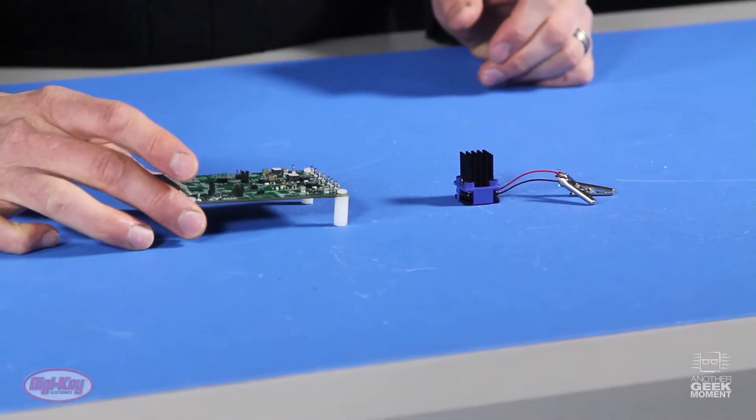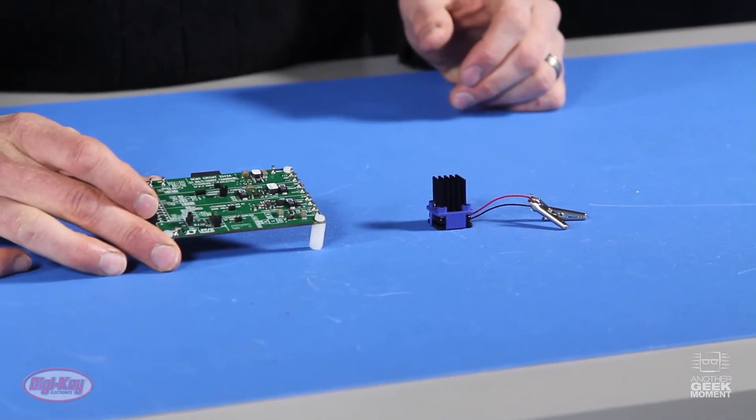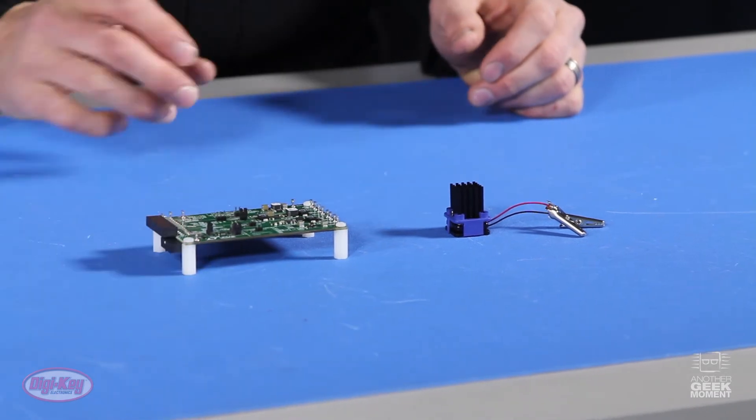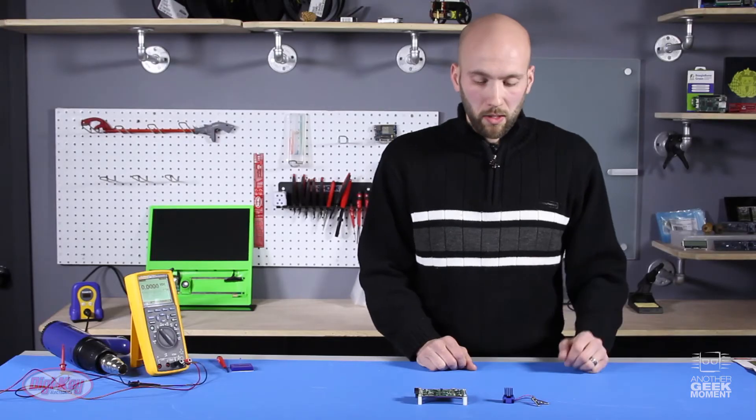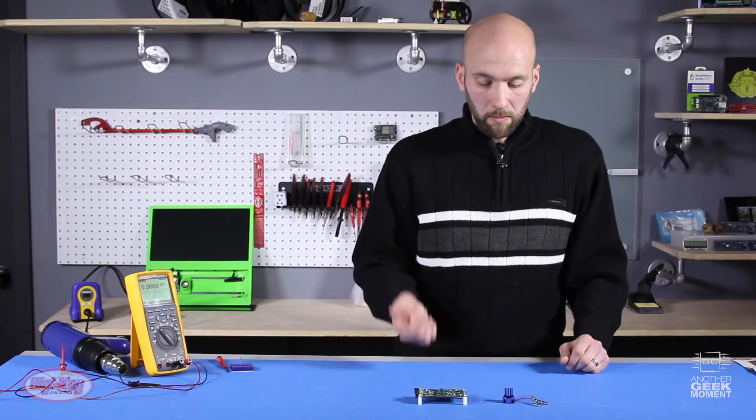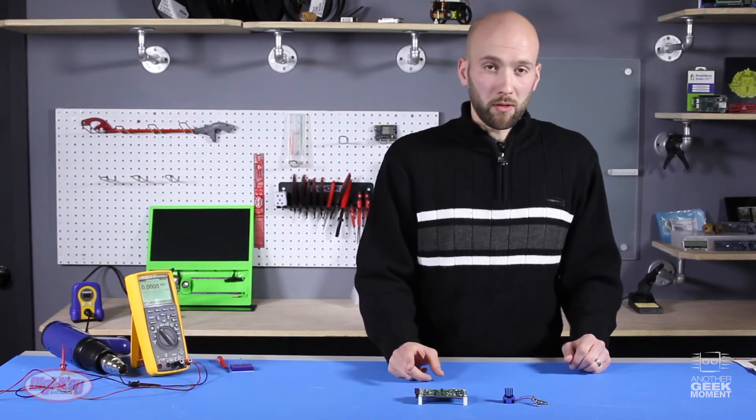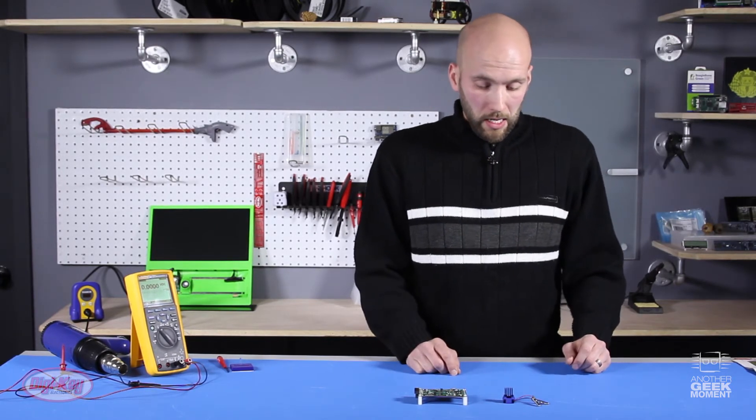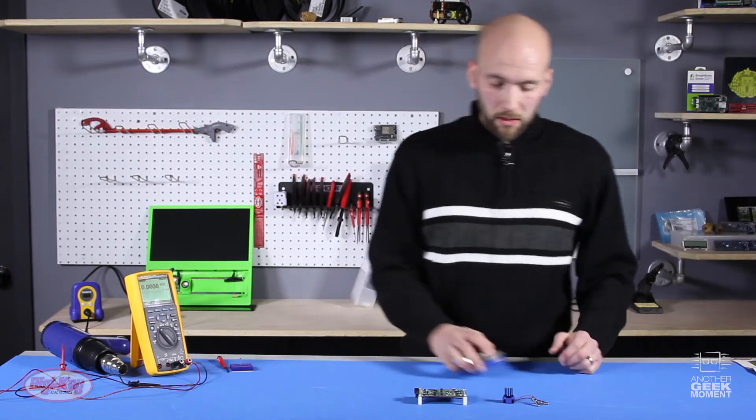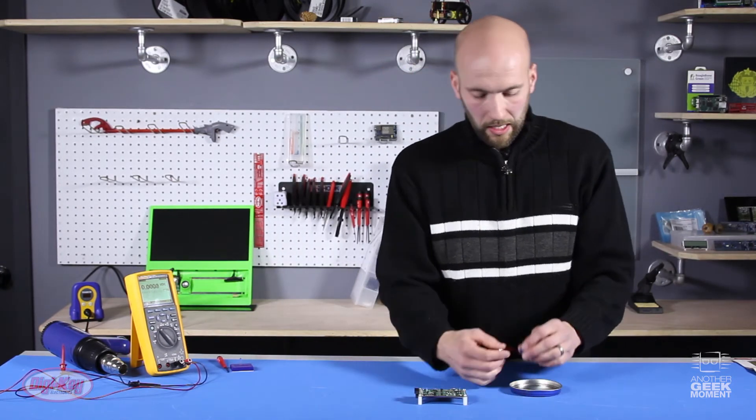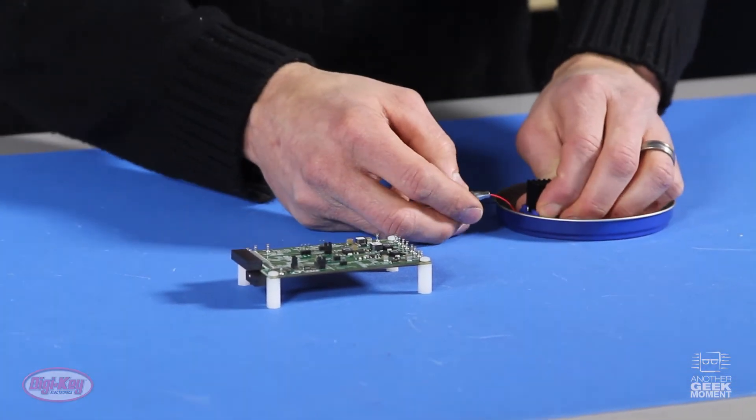The board here also has a 20 millivolt to 400 millivolt range so we're good there. Once it gets to the 20 millivolt range it will give you the 3.3 output that you're looking for. So we'll get this hooked up now to the multimeter and look at the output on the module itself.